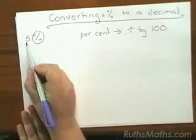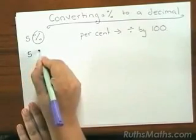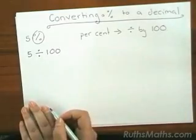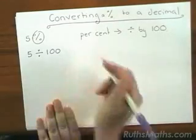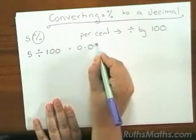So, 5 percent is the same as saying 5 divided by 100. Now you can put this into your calculator and that will give you 0.05.